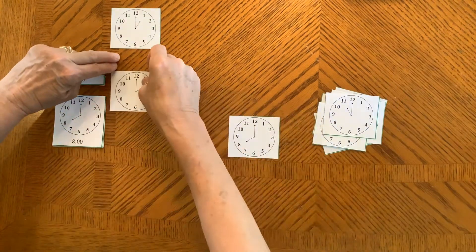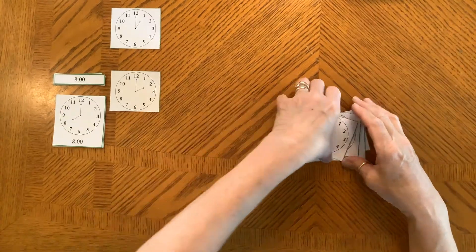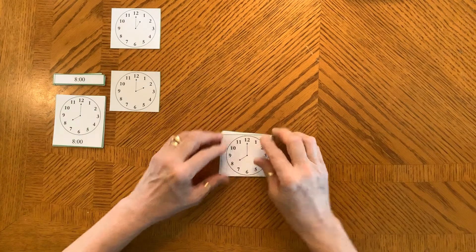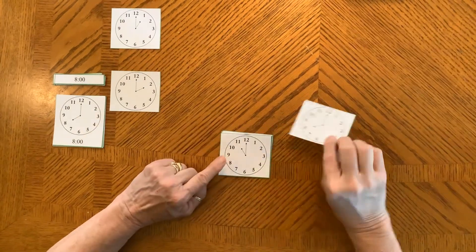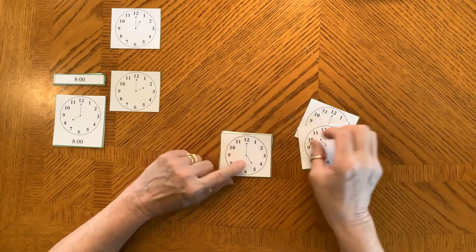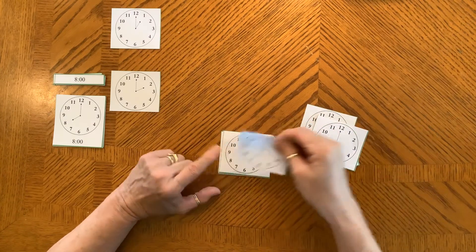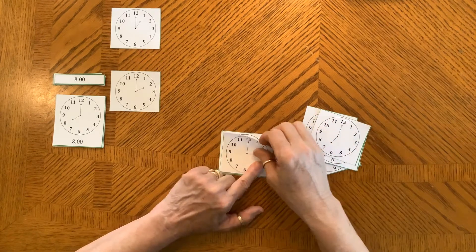And next we're going to look for three o'clock. So I just stack them up again. Start reading again. Eight o'clock. Eleven o'clock. Five o'clock. Seven o'clock. Three o'clock. Oh, found it.